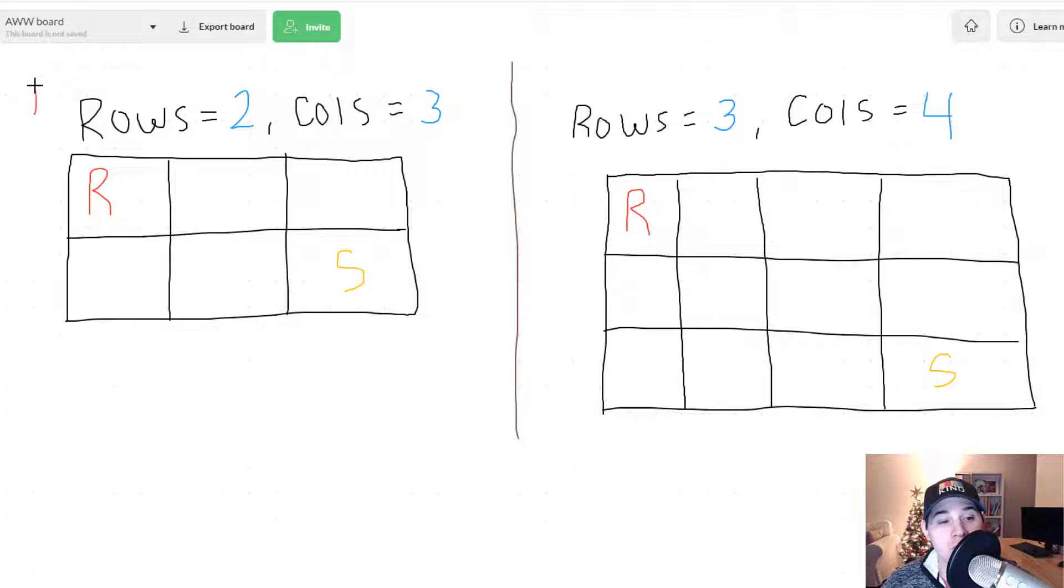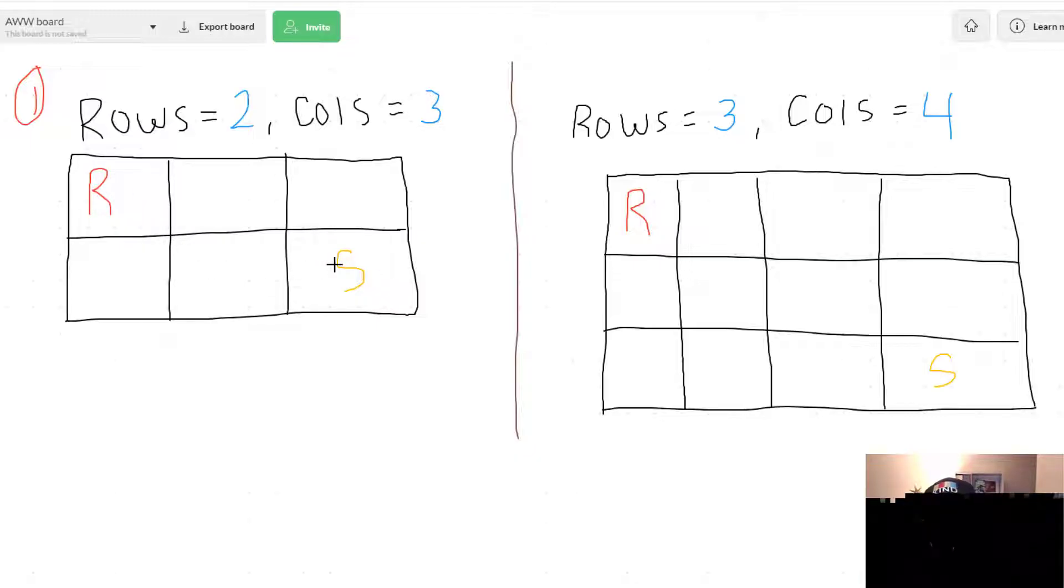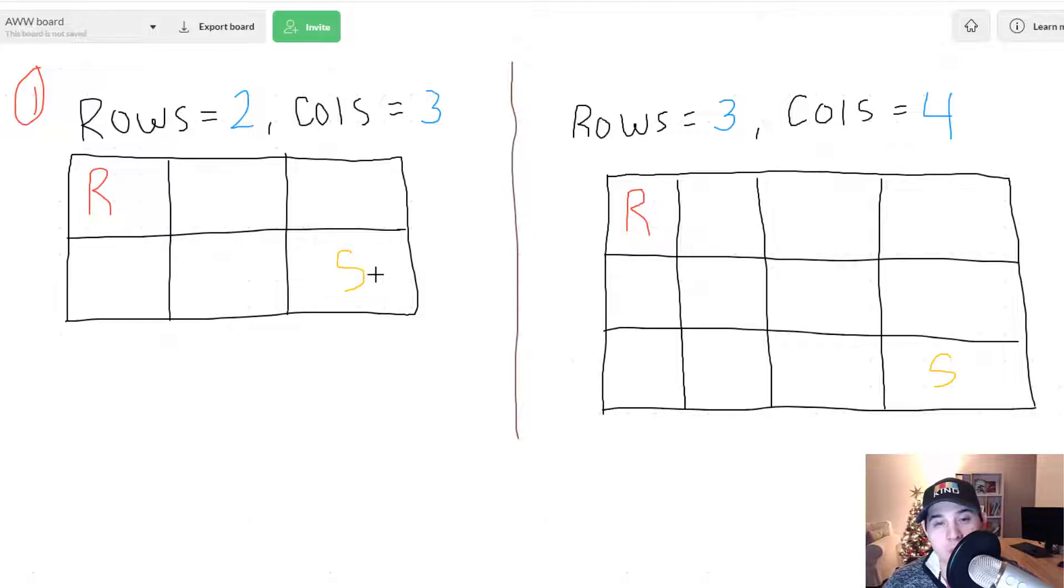So in this first example on the left side we have a grid where we have two rows and three columns. And so we need to determine how many paths we can take for the robot R to reach the star which is our finish and that is in the bottom right.